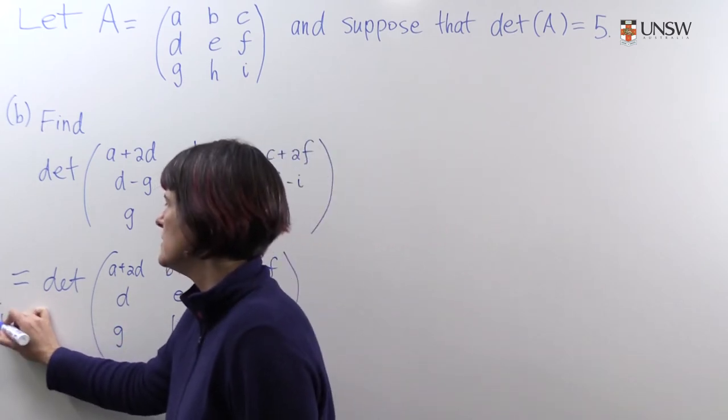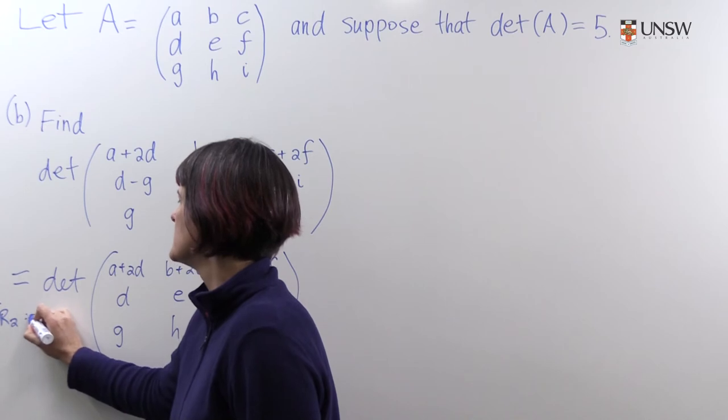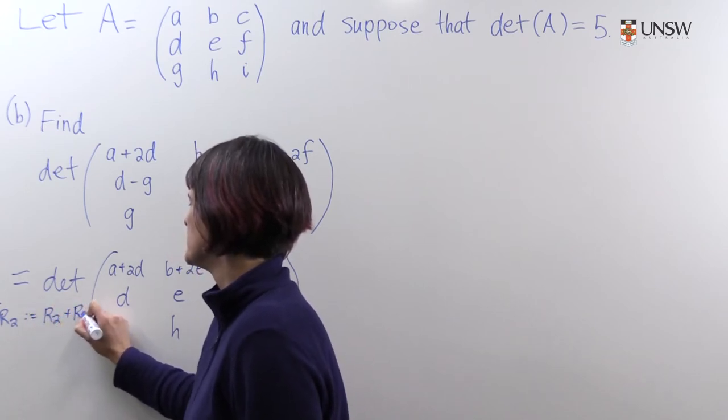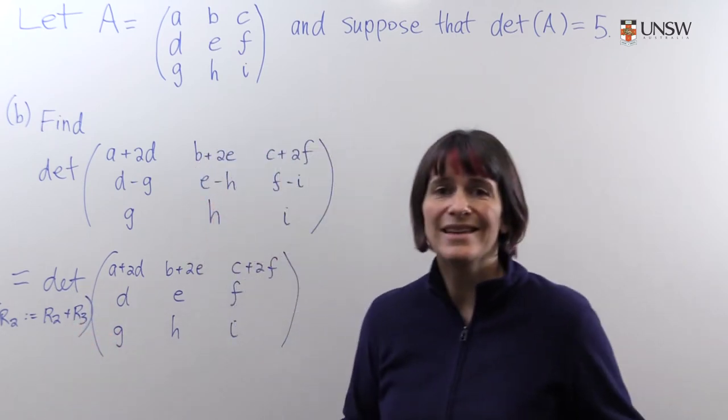The operation that we did, row two becomes row two plus row three. And this is easy. It does not affect the determinant.